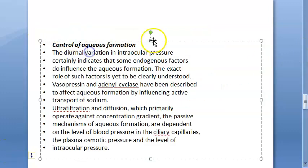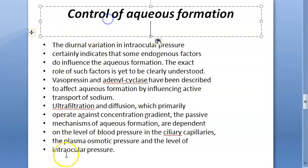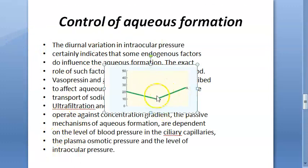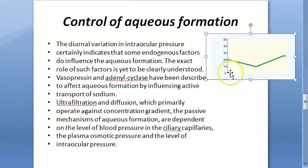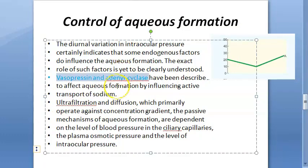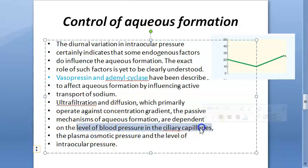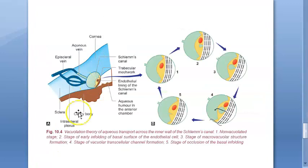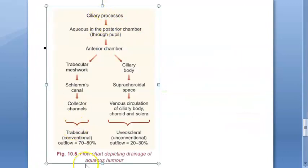Aqueous humor formation is controlled by several factors. There is some diurnal variation in intraocular pressure, indicating that certain factors influence formation. These include vasopressin, adenyl cyclase, blood pressure, and osmotic pressure.